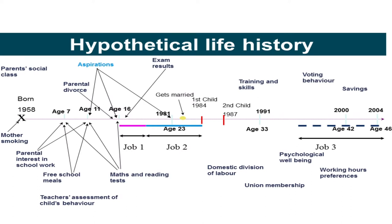Another way of visualising this is to think about a particular individual. All were born in one week of 1958 and you have contextual information such as parental social class at birth and whether the mother was smoking. Then you have variables repeated through childhood — like how interested the parents were in the child's schoolwork as reported by teachers — things like free school meals, maths and reading tests. You also have key dates like when parents divorced and the different ages at which the children were surveyed.